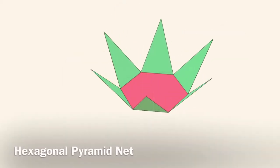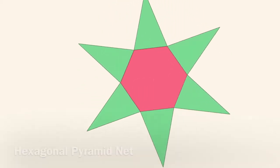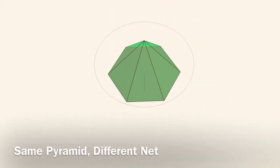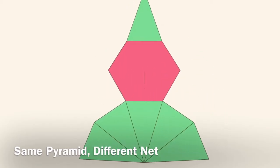Here's a hexagonal pyramid. Notice its hexagonal base and its six lateral triangles. Here's the same pyramid, but it's oriented differently. But it's still a hexagonal pyramid net.